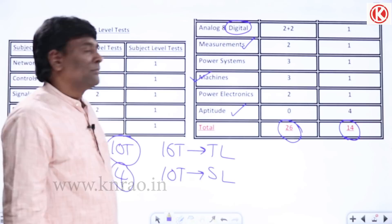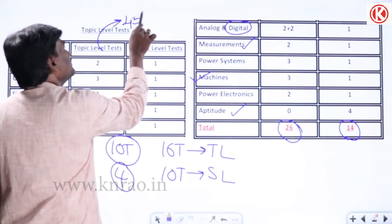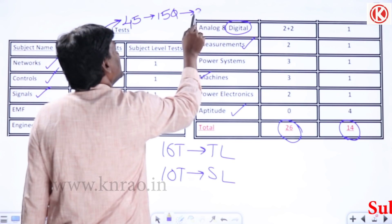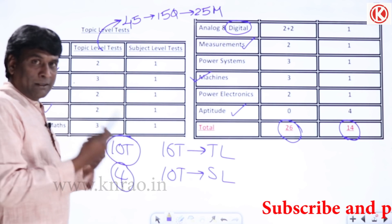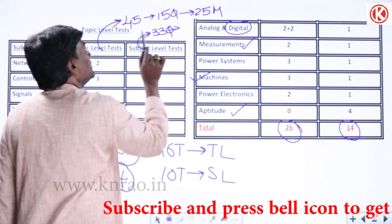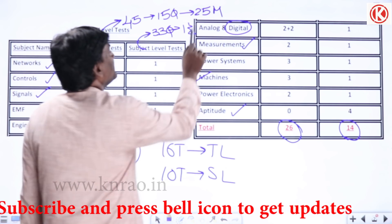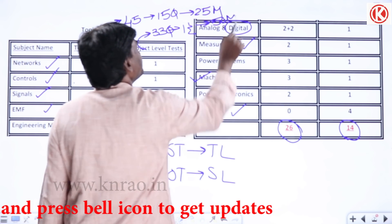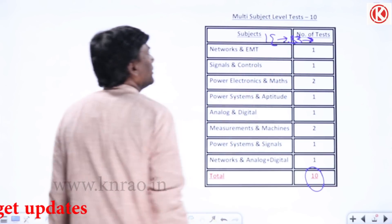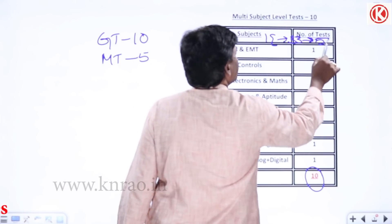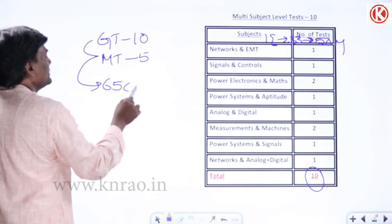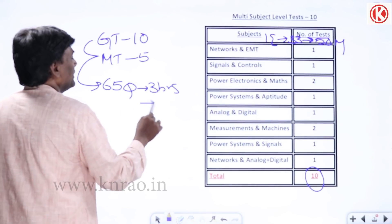Each topic-level test is 45 minutes and contains 15 questions meant for 25 marks. Subject-level tests contain 33 questions for one and a half hours (90 minutes) and are meant for 50 marks. Multi-subject level tests are also one and a half hours with 33 questions and 50 marks. Mock tests and grand tests will be just like GATE — 65 questions, three hours, and 100 marks.